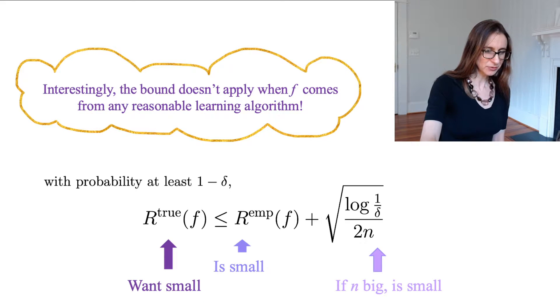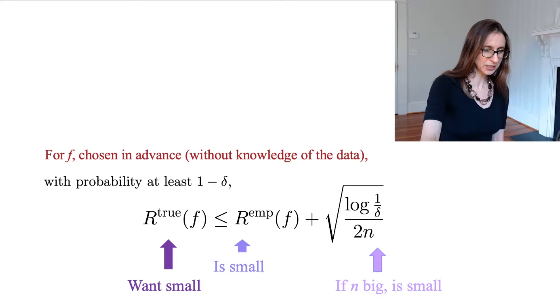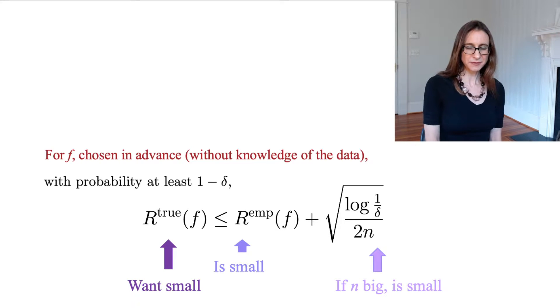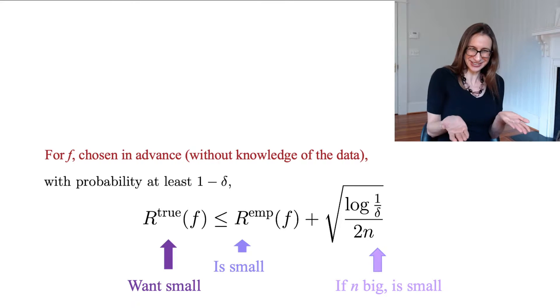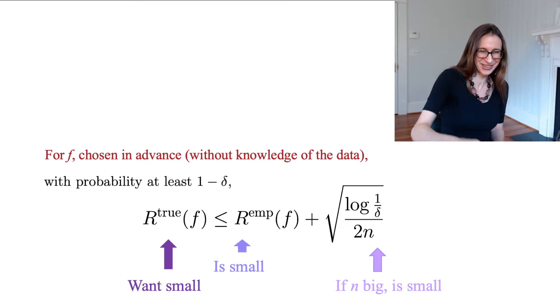And the reason it goes wrong is because it assumes that the function f is sort of a known quantity, that it's known before you look at the data. But what learning algorithm do you know that doesn't depend on data? That's not a reasonable learning algorithm. It doesn't look at the data. It just fixes a function in advance.